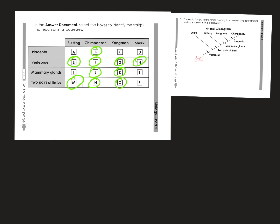The kangaroo and chimpanzee are most closely related since the only difference is the placenta — and in fact, they're both mammals. The bullfrog is more closely related to chimpanzees and kangaroos than to a shark, because it shares the two pairs of limbs character. The shark is furthest away evolutionarily. The most recent common ancestor is between kangaroo and chimpanzee. These are the kinds of questions you can read off a cladogram.